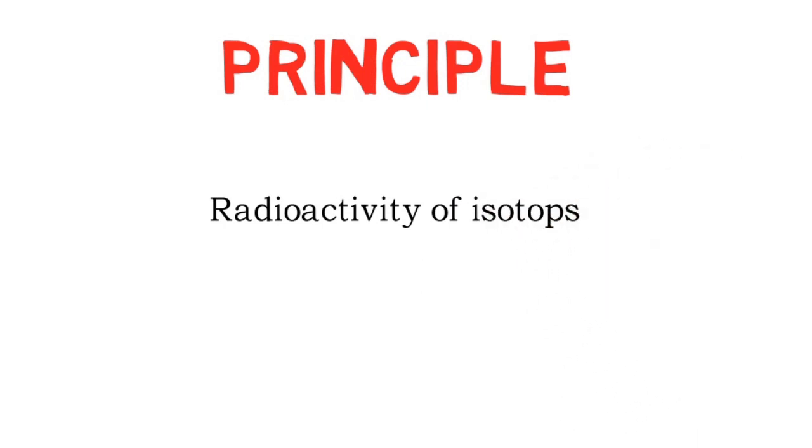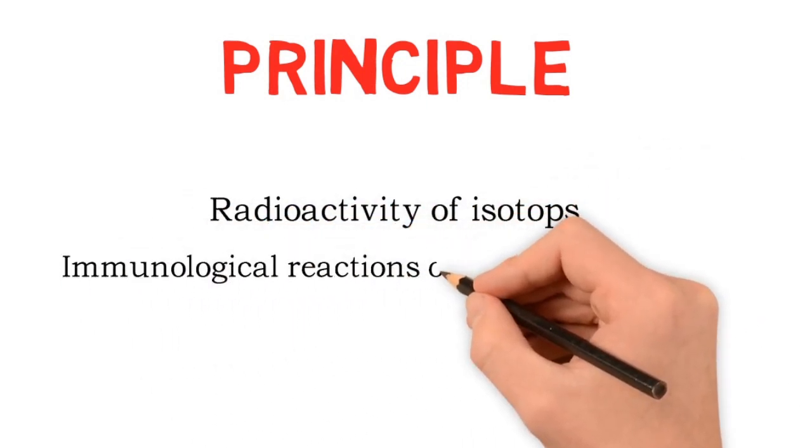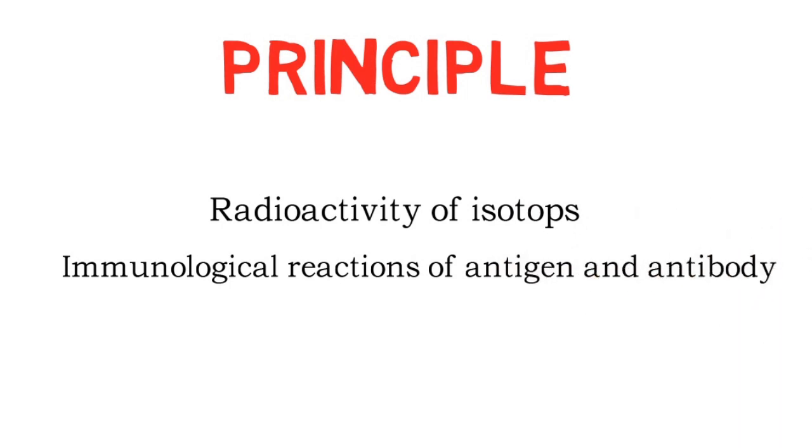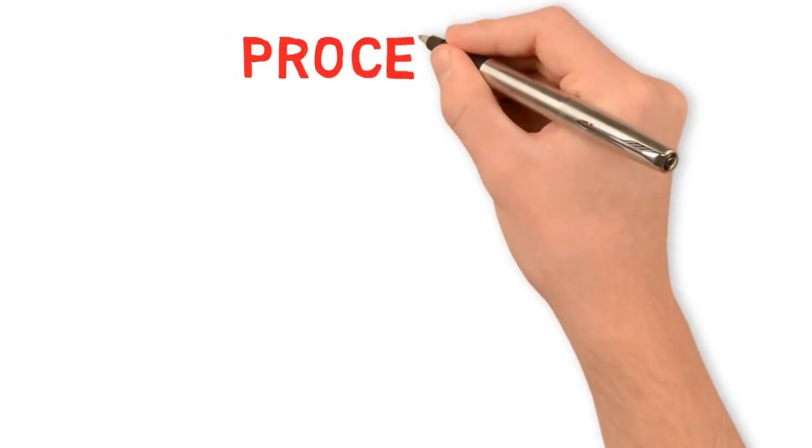Next point is principle. As the name implies, radioimmunoassay is the combination of radioactivity of isotopes and immunological reactions of antigen and antibody.